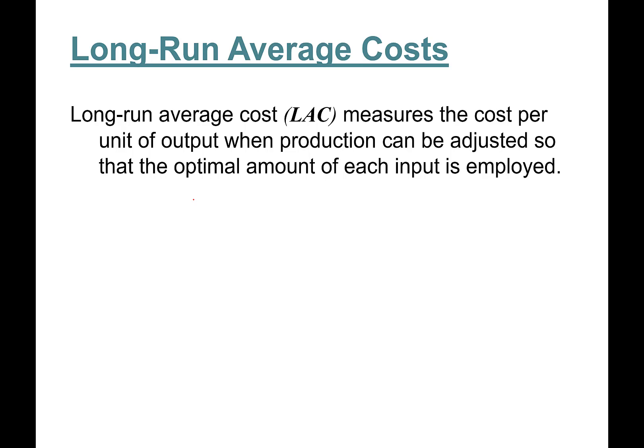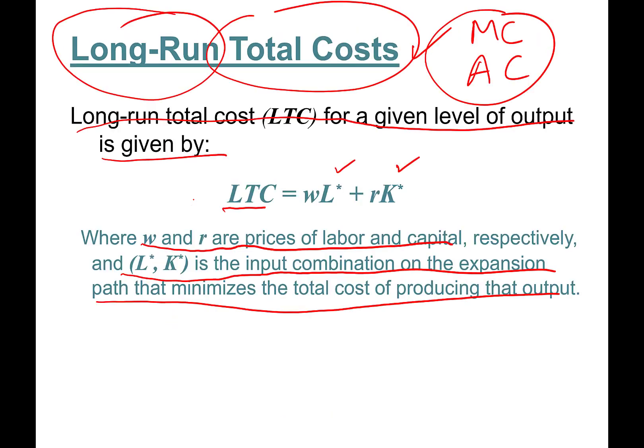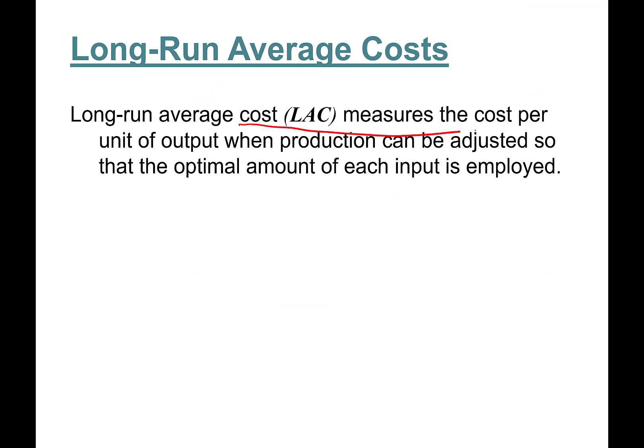Let's talk about long-run average costs. Very simple, just like the short run: you grab the long-run total cost divided by quantity. Long-run average cost (LAC) measures the cost per unit of output when production can be adjusted so that the optimal amount of each input is employed.